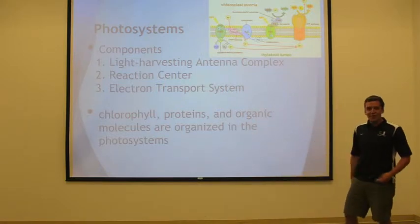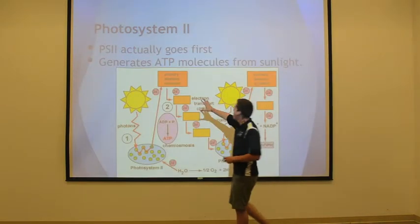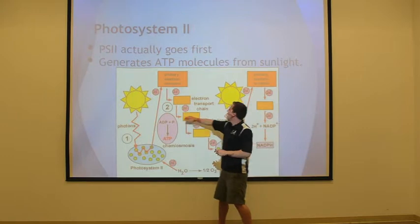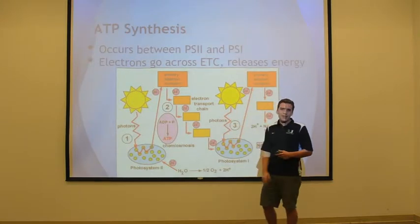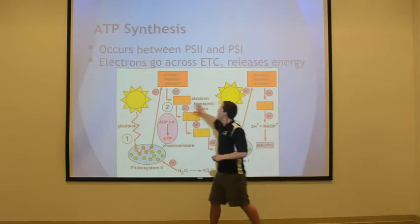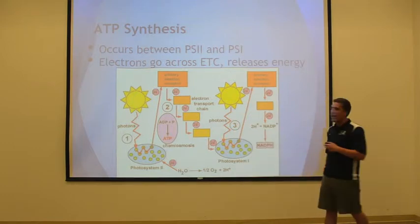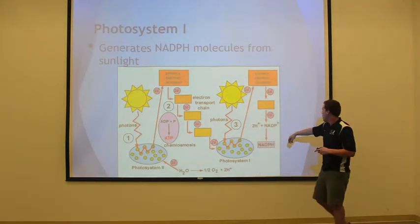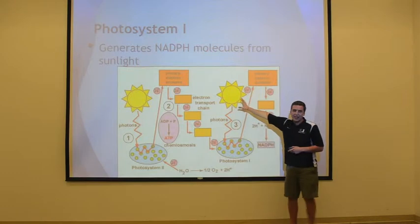Continuing on the subject of photosystems, we're going to begin with photosystem II. Photosystem II generates ATP from ADP molecules. After photosystem II, we have ATP synthesis. ATP synthesis comes in between photosystem II and photosystem I. During ATP synthesis, electrons go across the electron transport chain and release energy. After ATP synthesis, we move on to photosystem I, where NADPH is generated from NADP molecules. Again, this is all happening from sunlight.